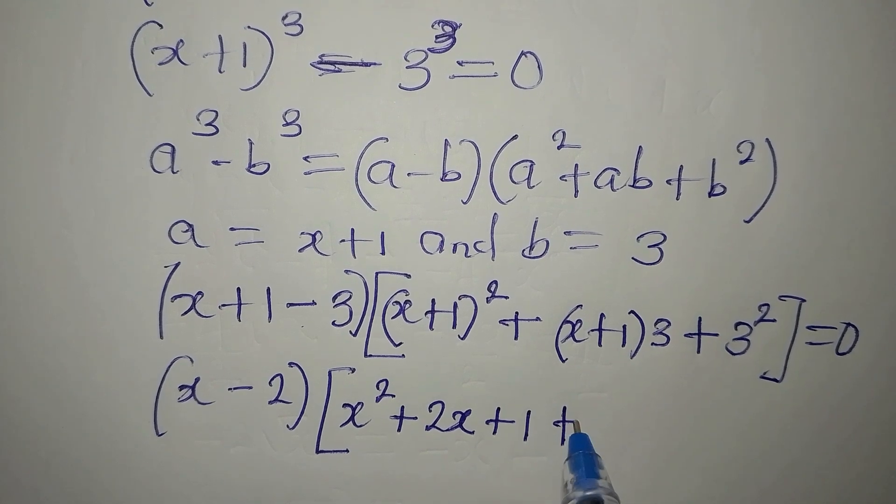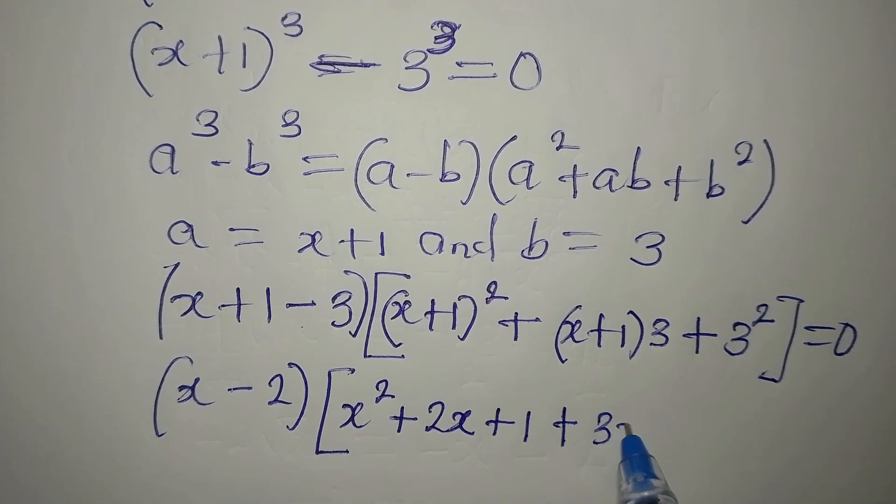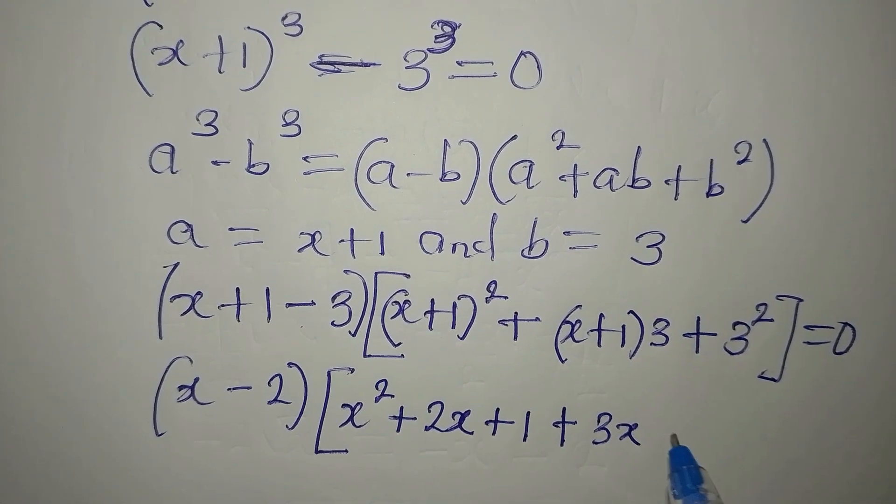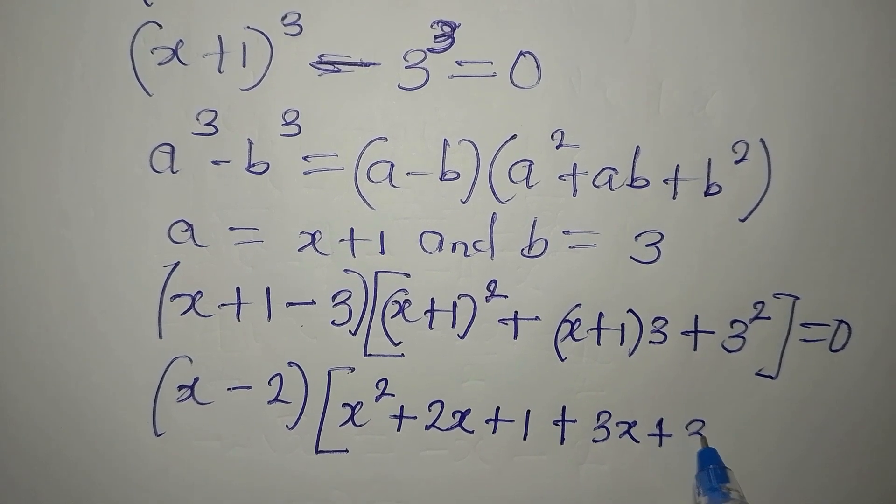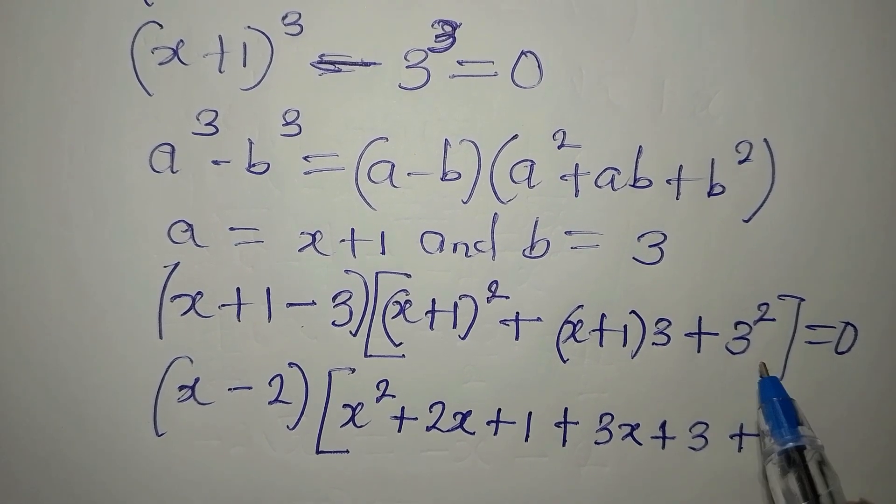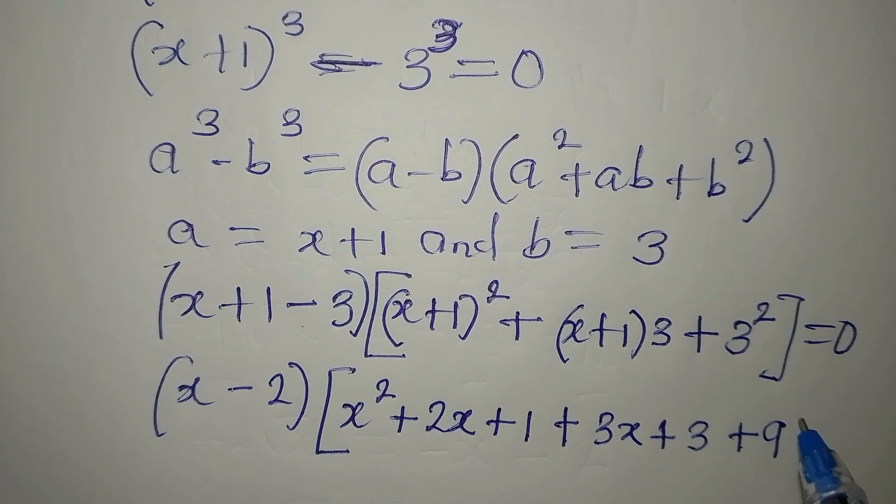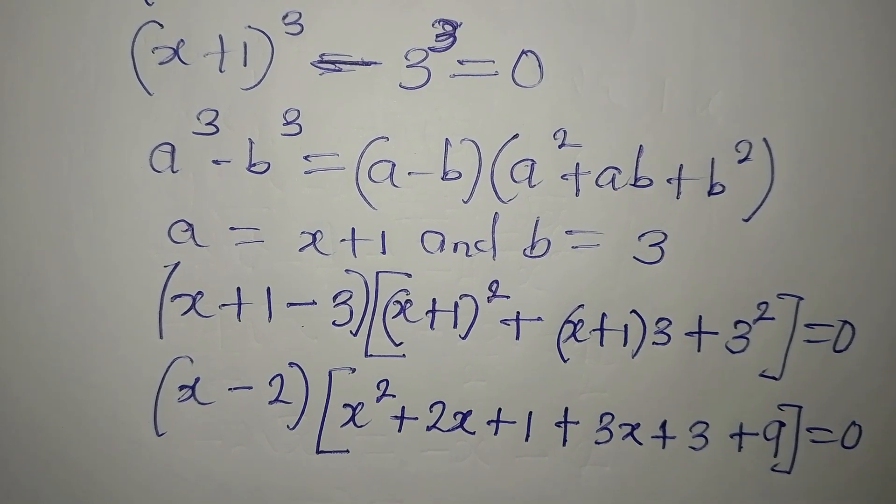Then plus 3 times x is 3x, and 3 times 1 is plus 3. Then plus 3 squared, that is 9. We close and equate to 0.